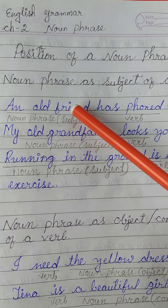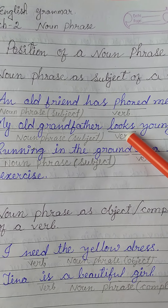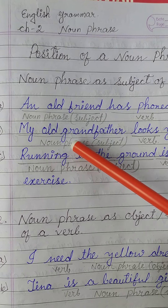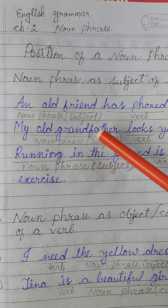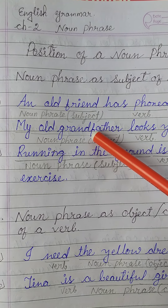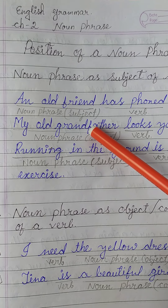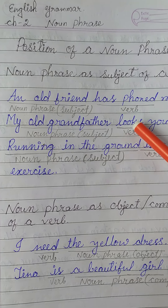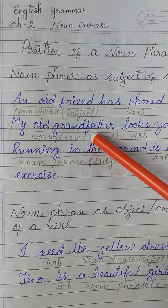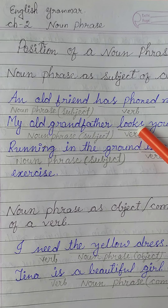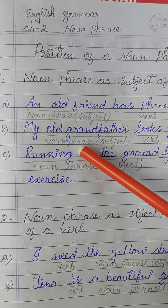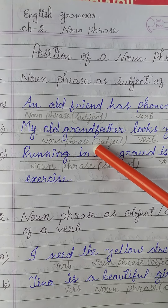Example B: 'My old grandfather looks young.' In this sentence, the subject is 'my old grandfather' and the verb is 'looks'. This group of words, 'my old grandfather', acts as the subject of the verb 'looks'. That's why we can say 'my old grandfather' is a Noun Phrase.